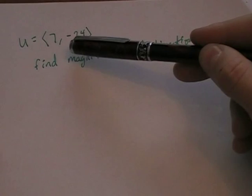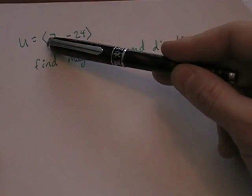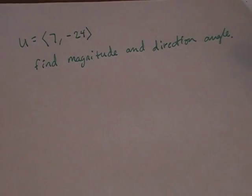It's very much like an ordered pair. You're going to go seven to the right and down 24. This is telling you, if you start at the origin, how to go in an x-y fashion to get to the end of this vector.